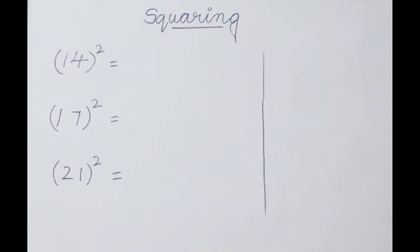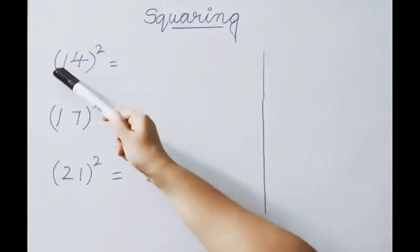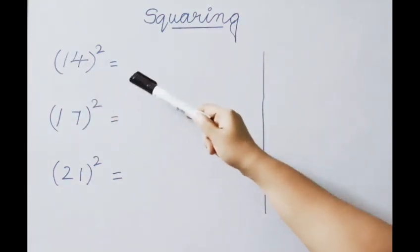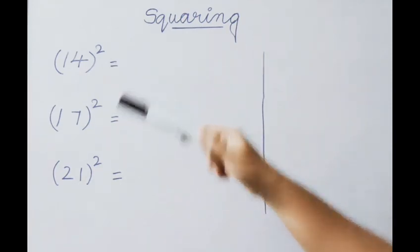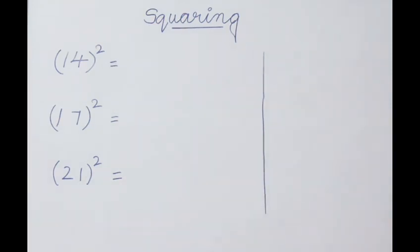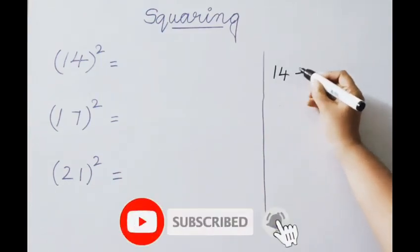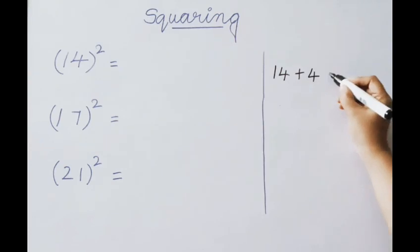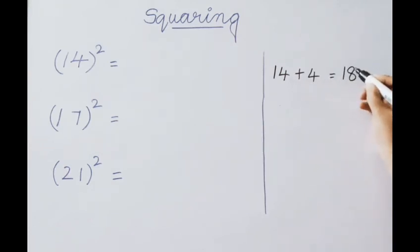Let us see our first example: 14 squared. Here the base number is 10. So, 14 means 10 plus 4 — the excess value above the base is 4. What we have to do is write down the given number 14, and our excess value is 4. Add both of them: 14 plus 4 is 18.